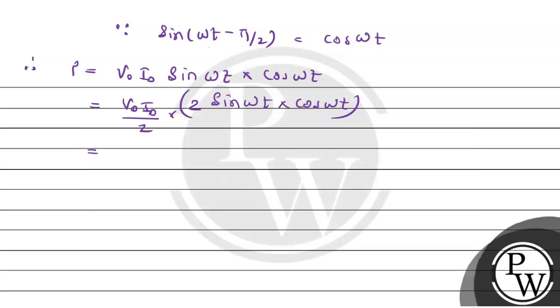So we have V naught I naught by 2, and 2 sine omega t cos omega t, which gives us V naught I naught by 2 into sine 2 omega t. This is the peak value.